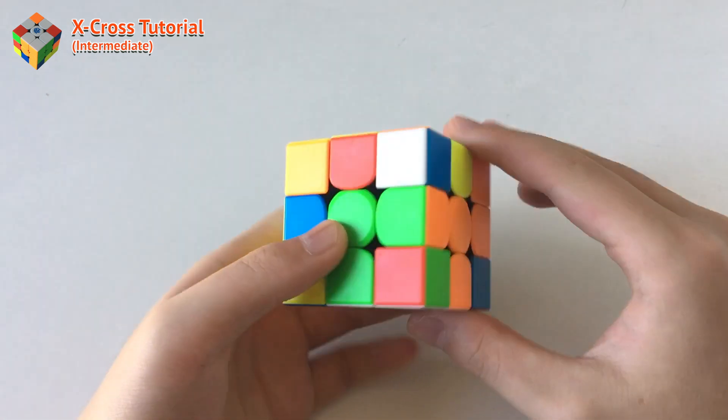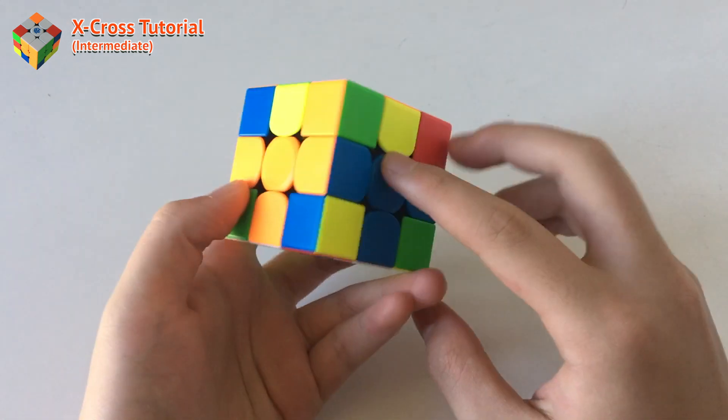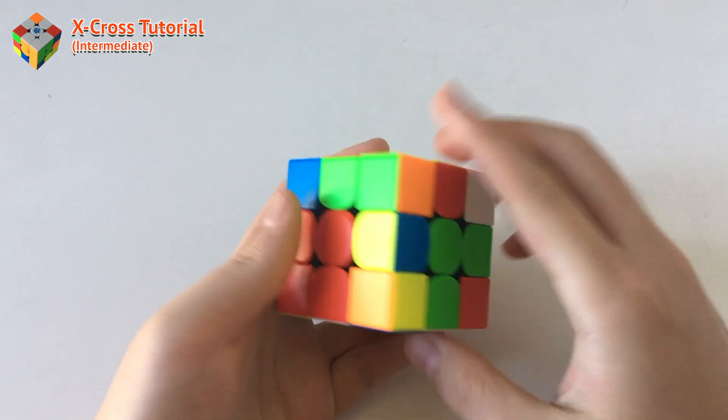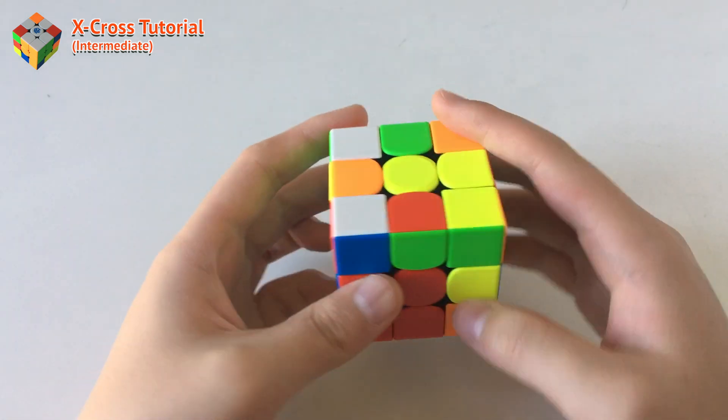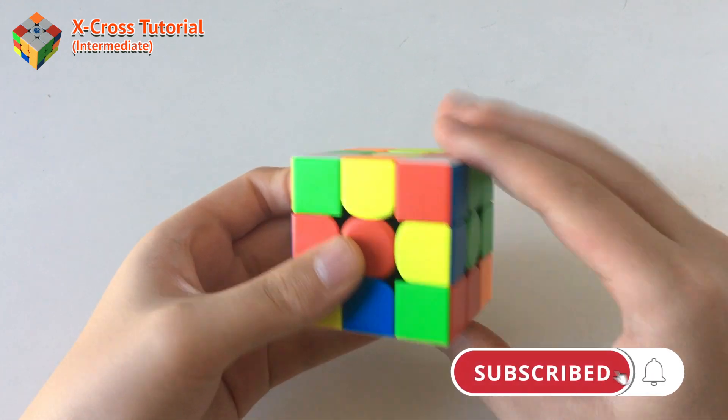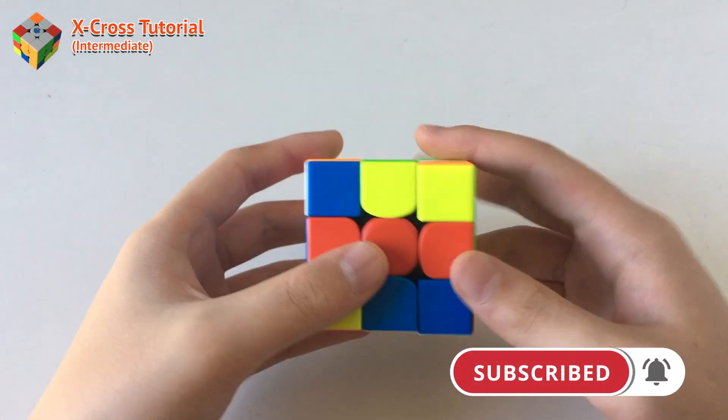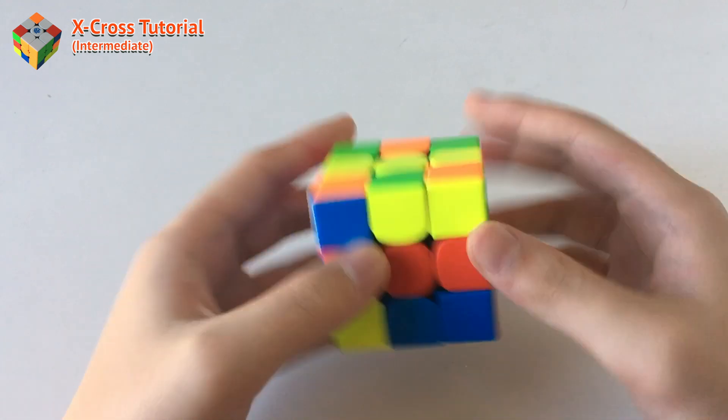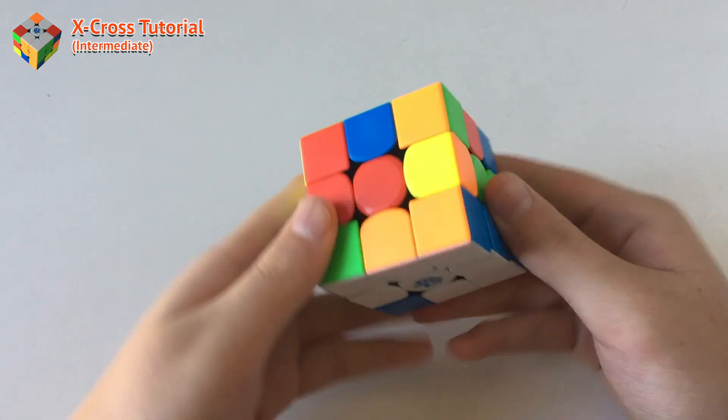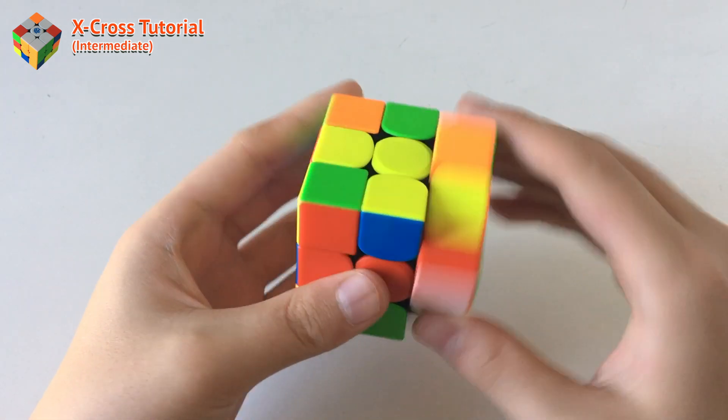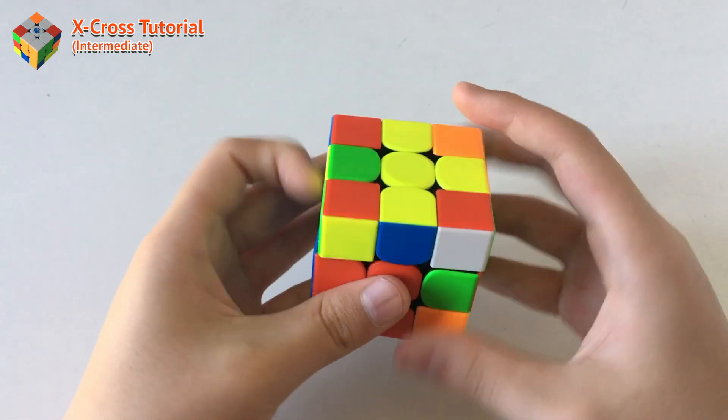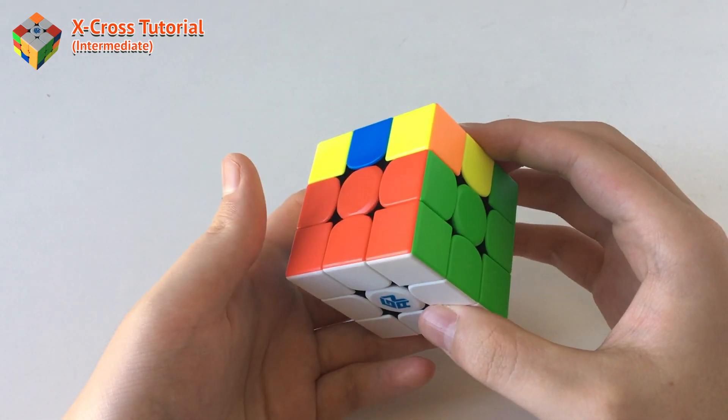So this is a triple x-cross. Basically, you have this line. All of these are solved except just this pair. So you can use this pair to do something very cool. So for example, I can do that. And then move that piece in. And then I can do that and then move that piece in. And then I can do that and move that piece in. And then at last, I could just finish this F2L. Like that.